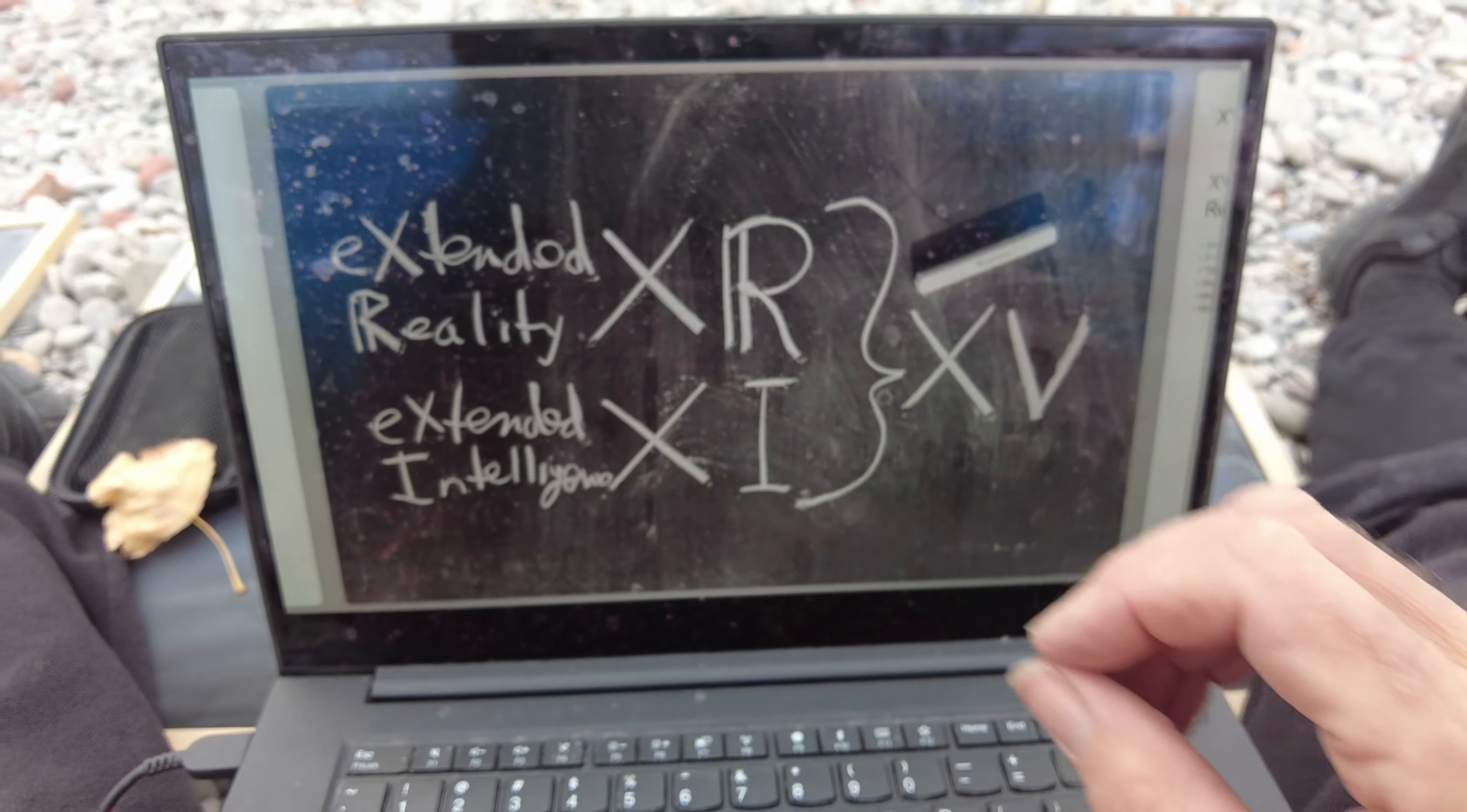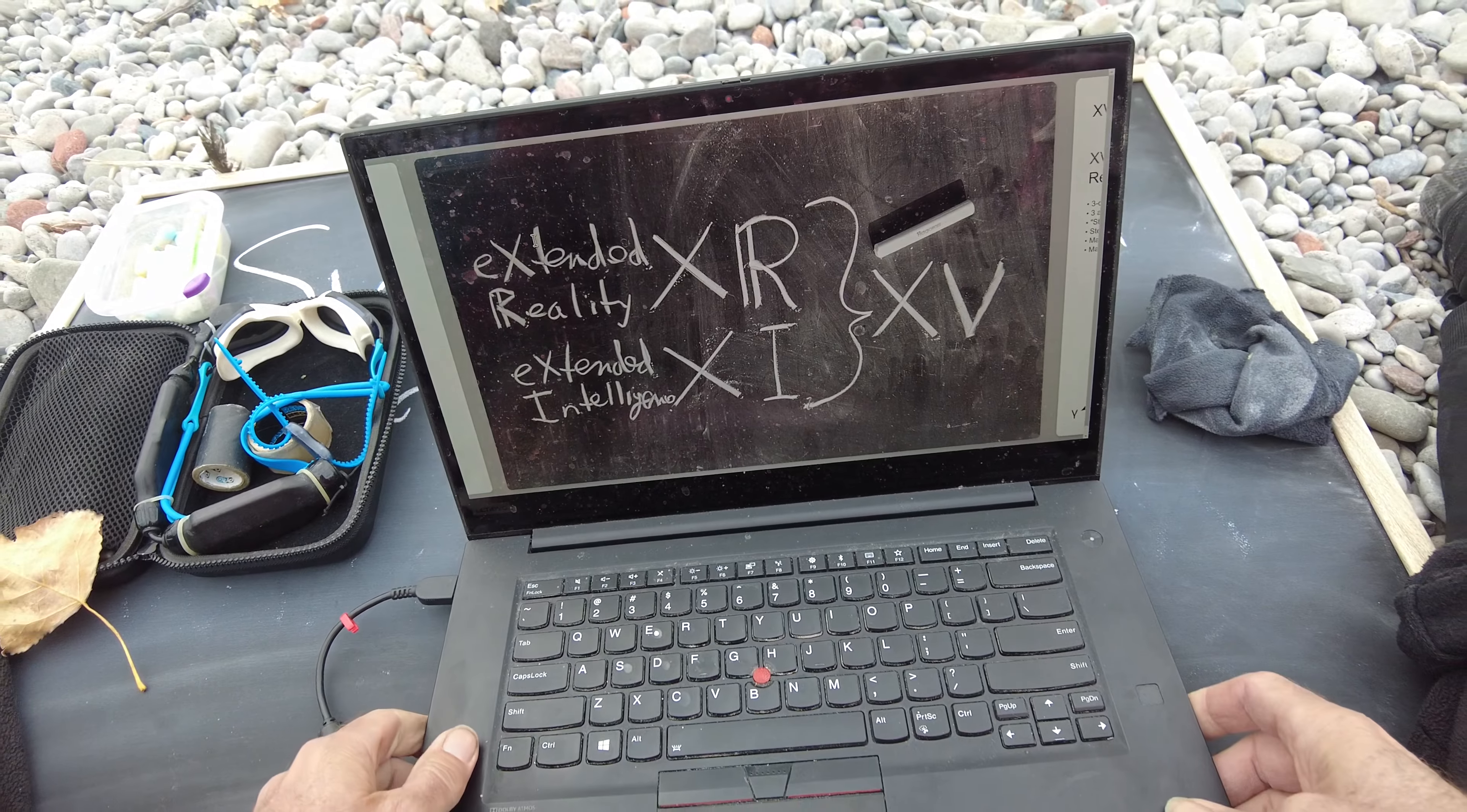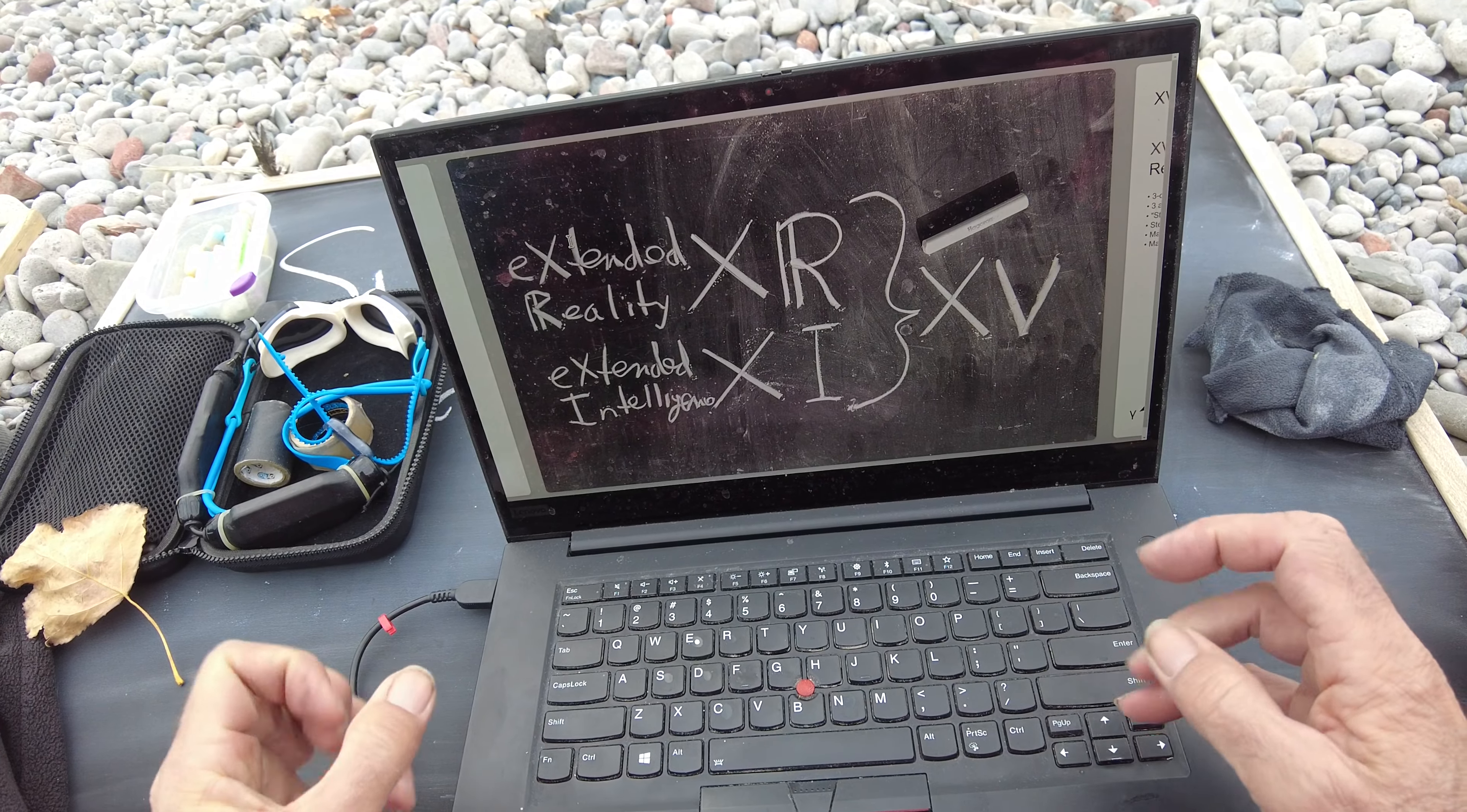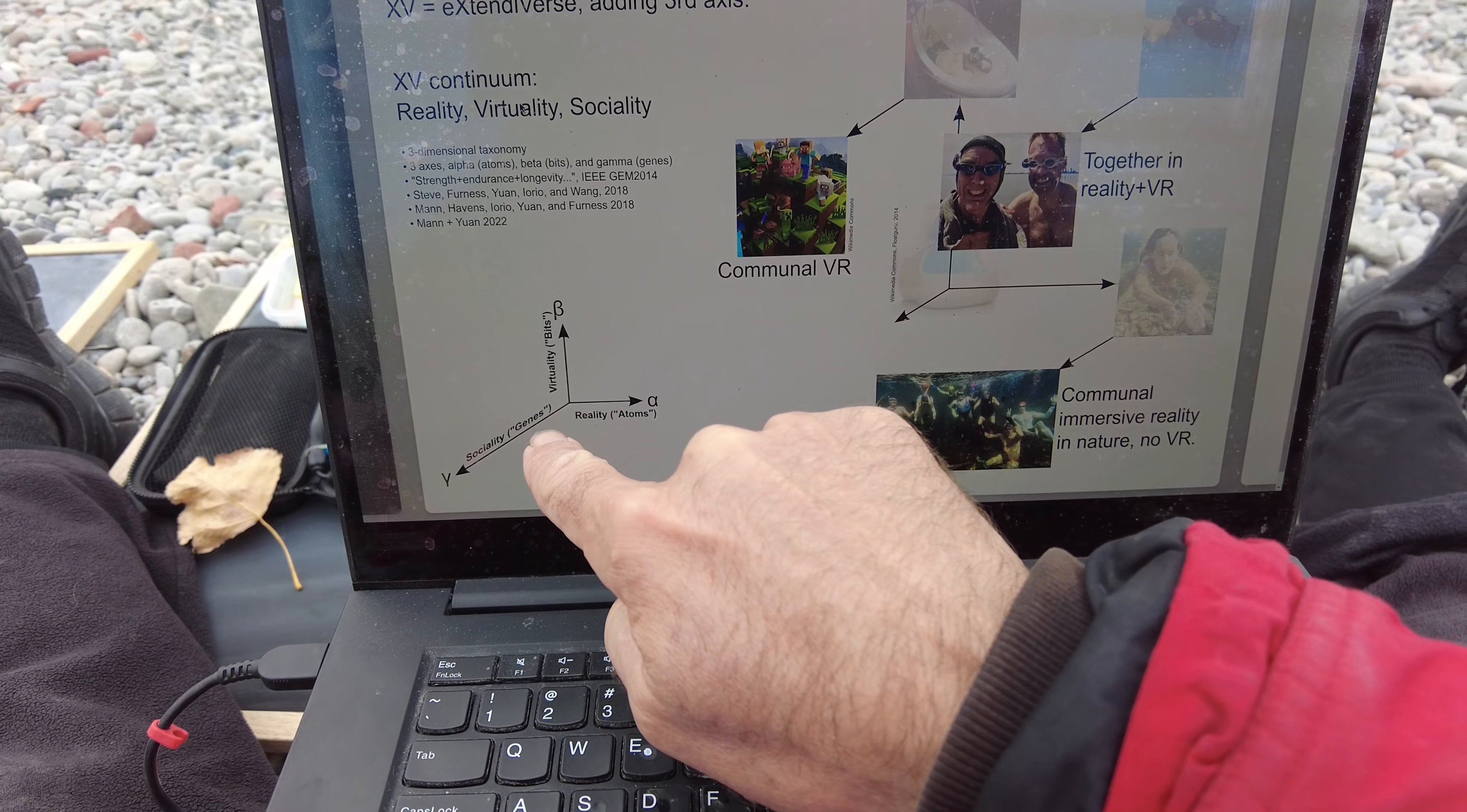So in some sense, the Xtendiverse is extended reality combined with extended intelligence, XI, the CXI, the Council for Extended Intelligence. I'm one of the founding members of it. And so a goal that we're trying to achieve with XI and with XR is this XV.